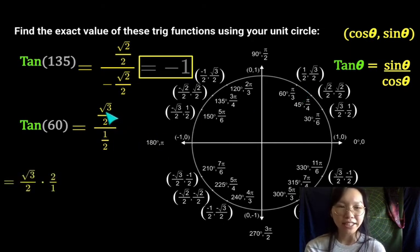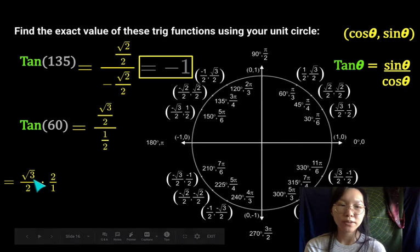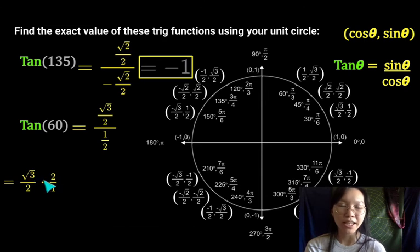If you remember fractions and division, hopefully you remember dividing fractions can be the same as flipping over the second fraction and turning it into a multiplication problem. So this turns into square root of 3 over 2 times 2 over 1. So notice I flipped over 1 half.